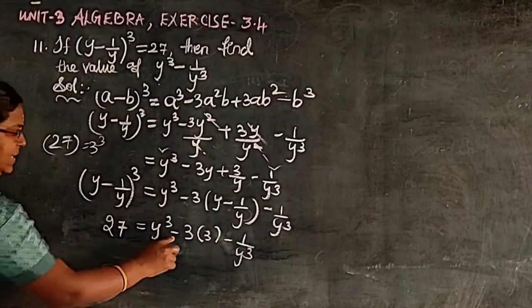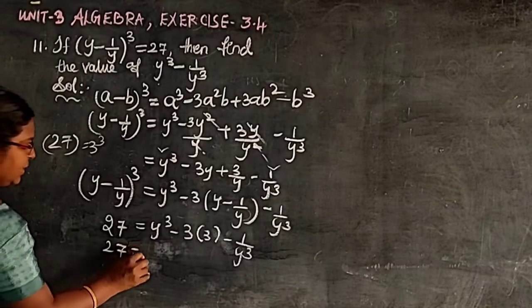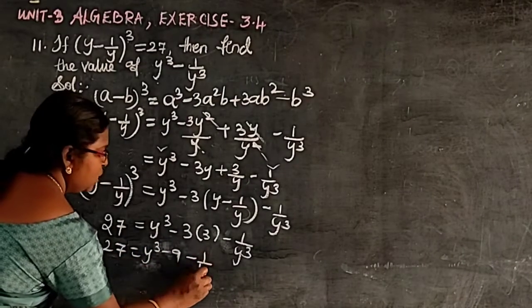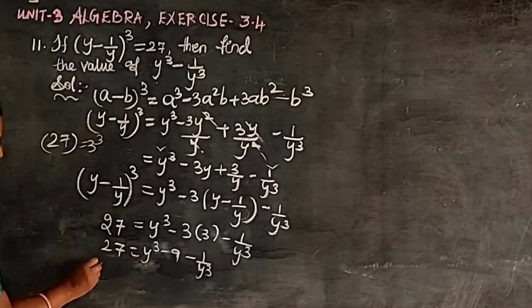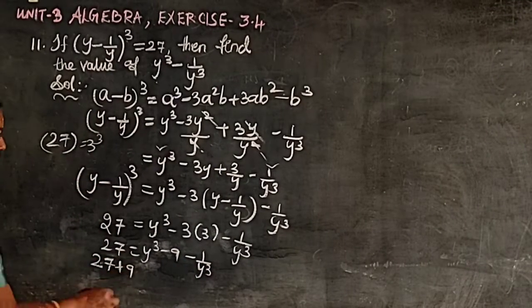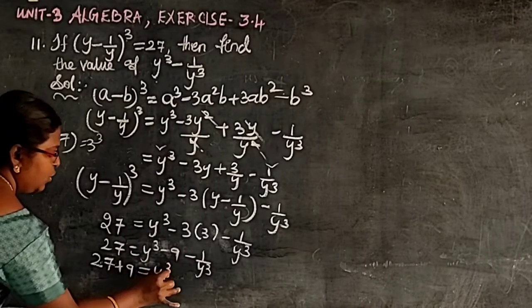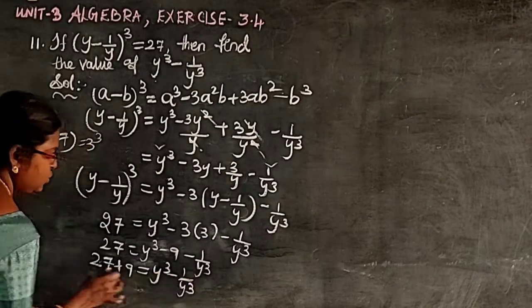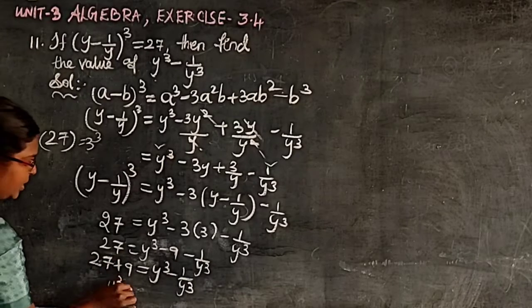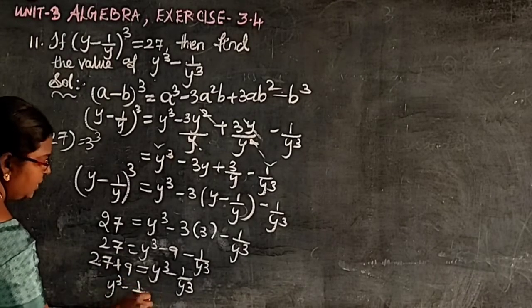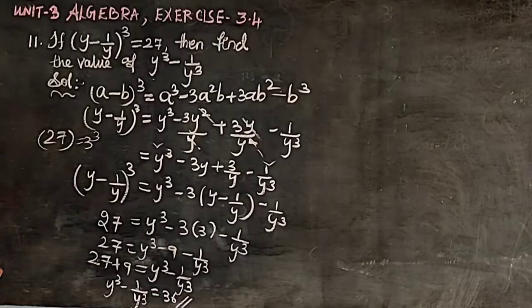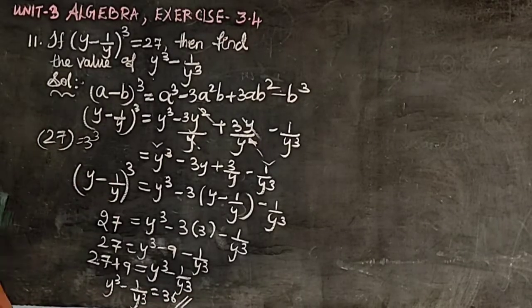3 × 3 = 9, so 27 = y³ - 1/y³ - 9. Moving -9 to the other side: 27 + 9 = y³ - 1/y³, which gives y³ - 1/y³ = 36. That is the answer for sum number 11.